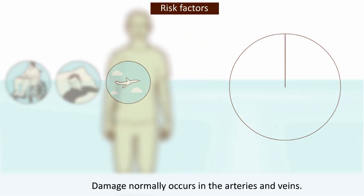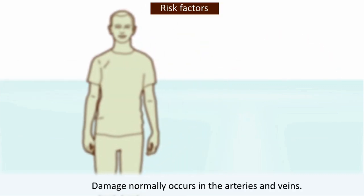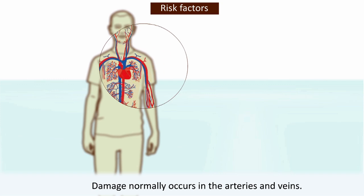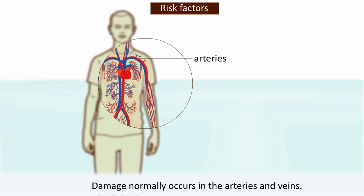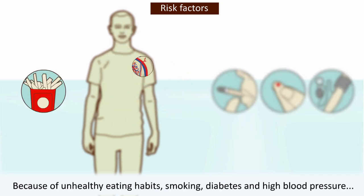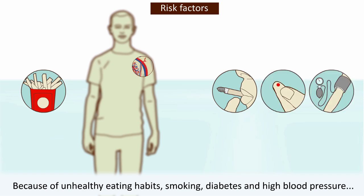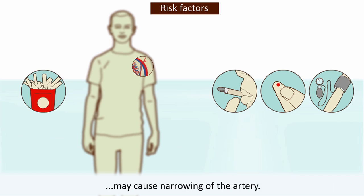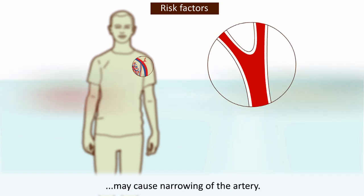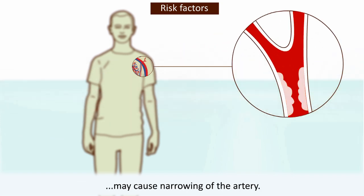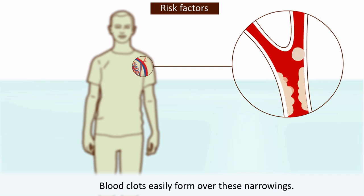Damage normally occurs in the arteries and veins because of unhealthy eating habits, smoking, diabetes, and high blood pressure. These may cause narrowing of the artery, and blood clots easily form over these narrowings.